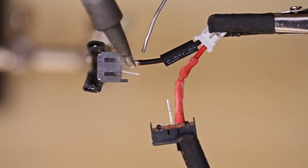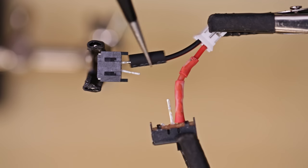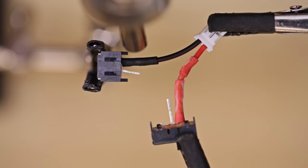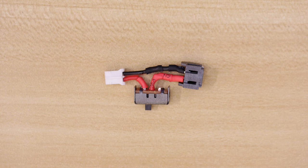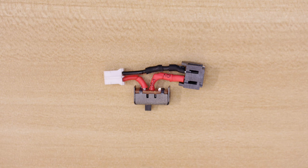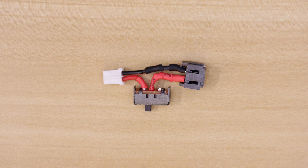Then solder the ground wire from the JST cable to the negative electrode on the female JST connector. And lastly, we'll connect the positive wire from the JST cable to the remaining electrode on the slide switch.